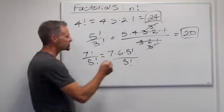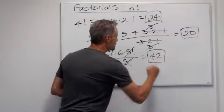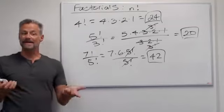And now the 5 factorials just cancel out. So I get 42. And it's as simple as that.